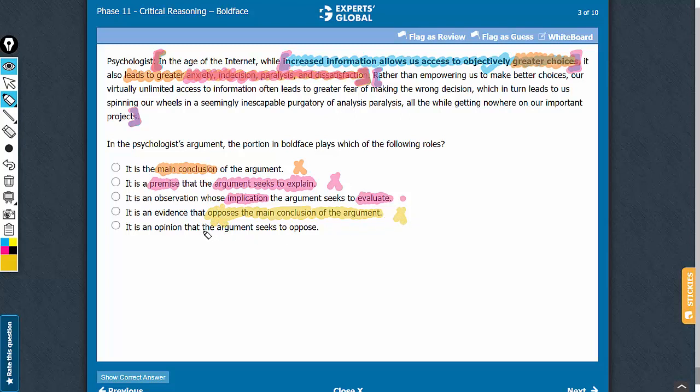Look at answer choice E now. Once again, it is not something that the argument seeks to oppose. The argument assumes this to be true in coming up with the complete conclusion here. So the argument cannot be opposing the first boldface. And therefore answer choice E should be very comfortably eliminated.